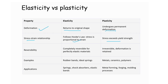In terms of irreversibility, elasticity shows complete reversibility for a perfectly elastic material, whereas for plasticity deformation is irreversible and will be retained. Examples of materials that exhibit elasticity include rubber bands and ideal springs. For materials that exhibit plasticity, examples include metals, ceramics, and polymers.